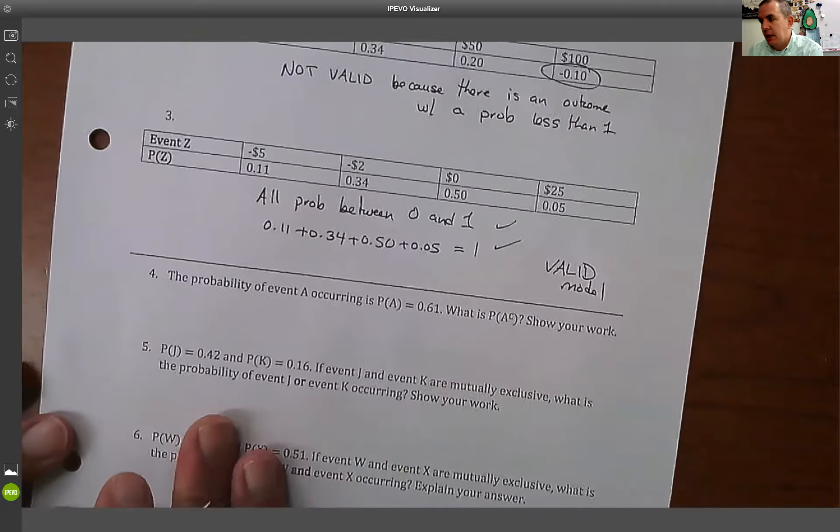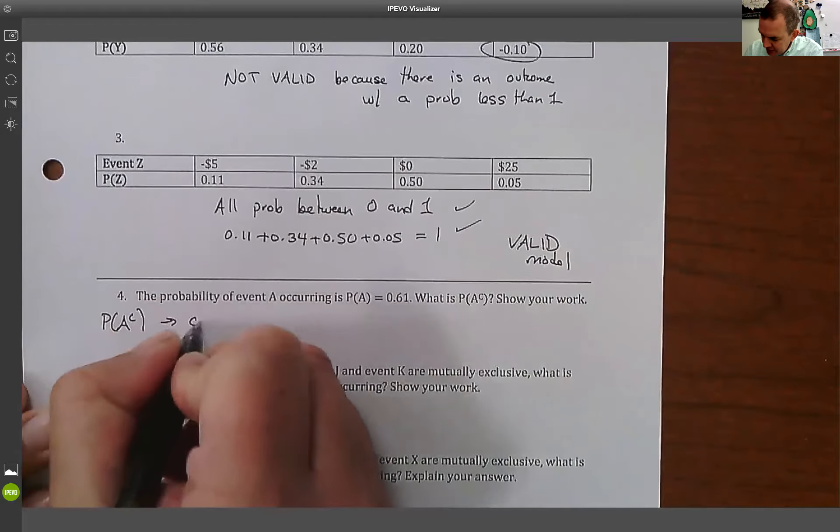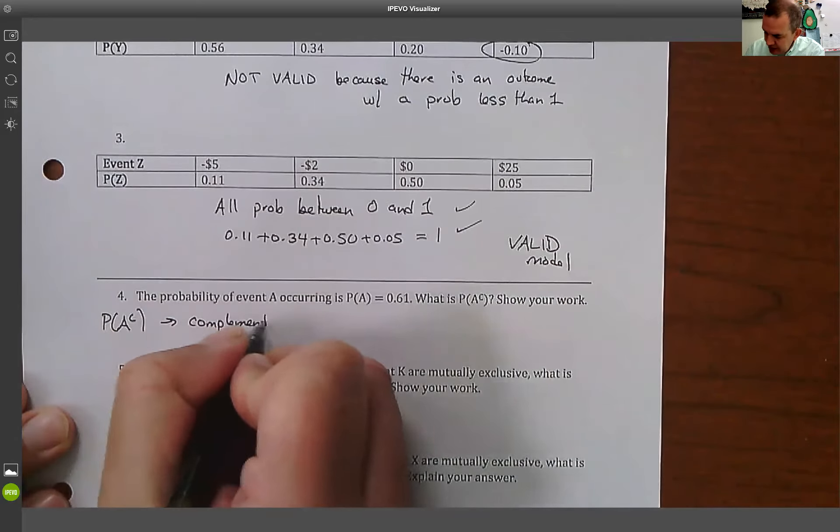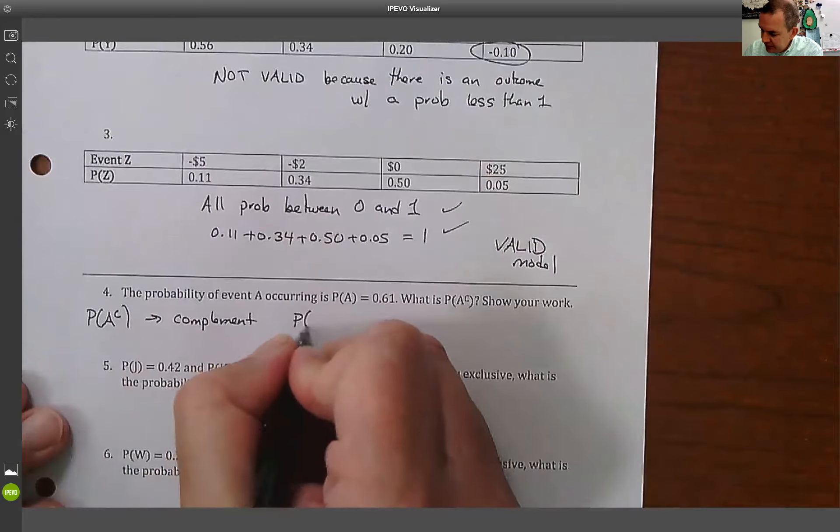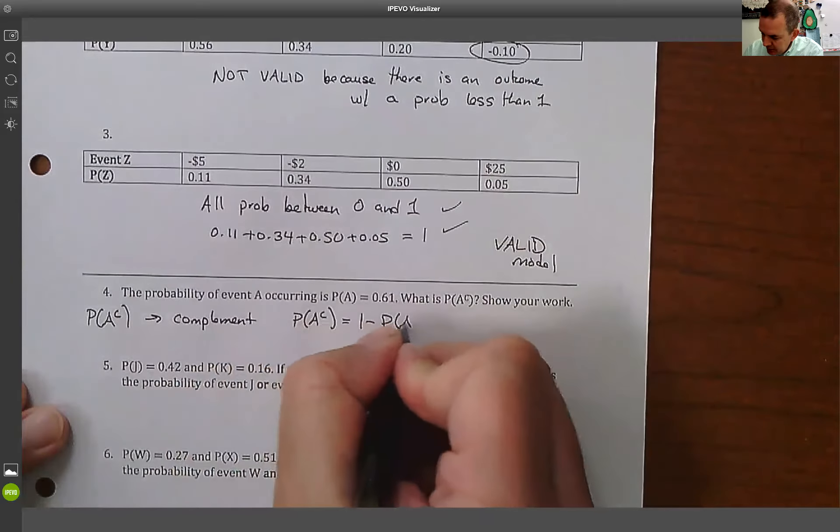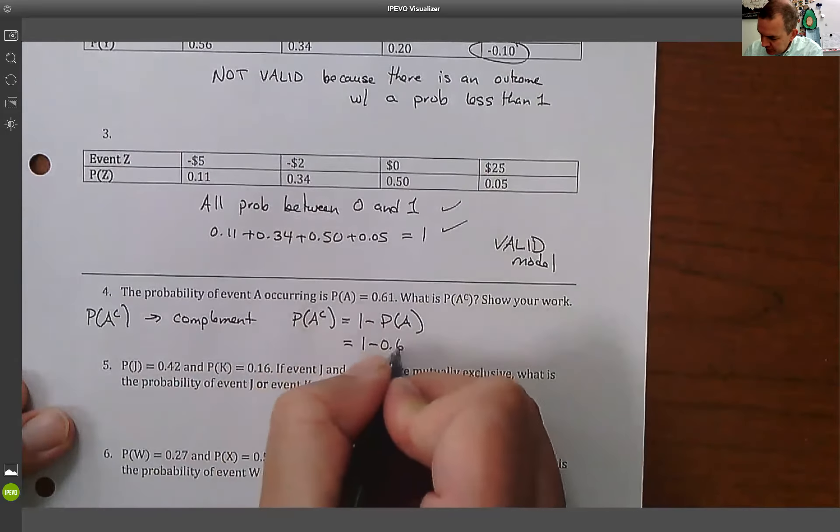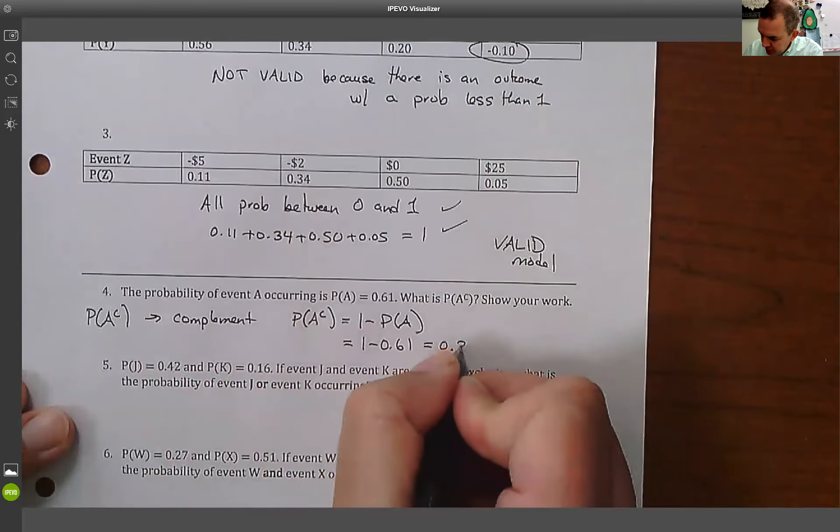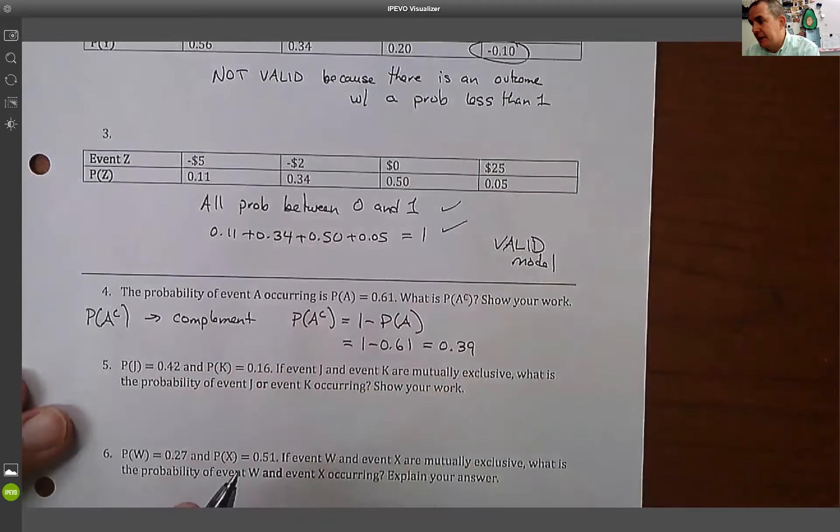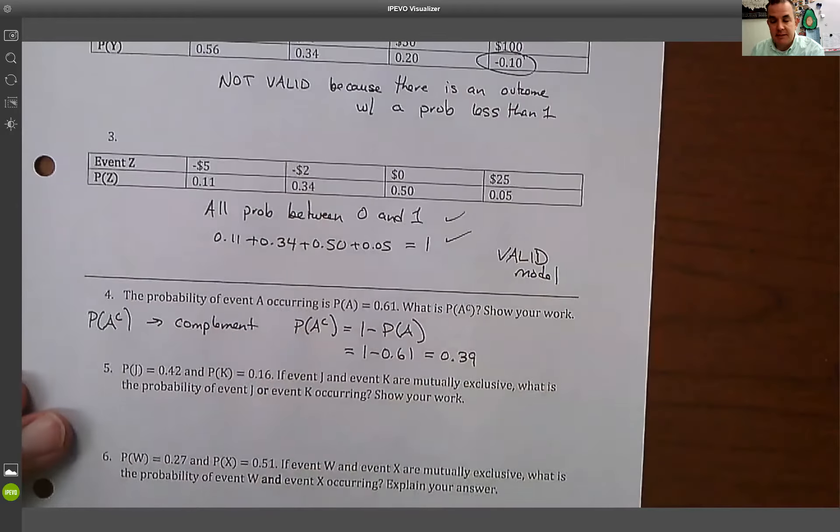Okay, next thing we talked about was this idea of the probability of A complement. This is the idea of a complement. What I mean by a complement is the probability of A not happening is 1 minus the probability of A happening. So in this case, that's going to be equal to 1 minus 0.61, that's 0.39. So the probability of A not happening is 39%.